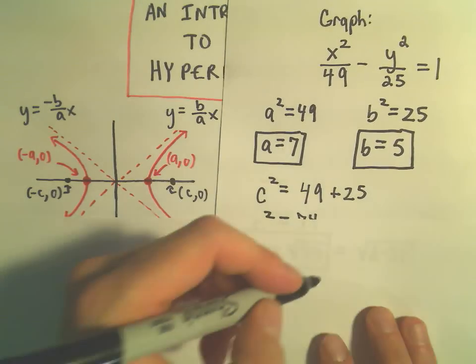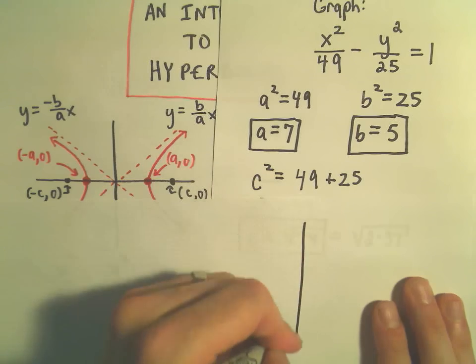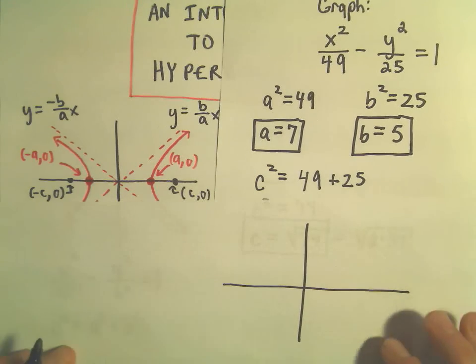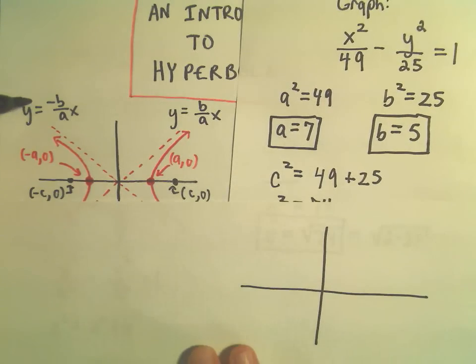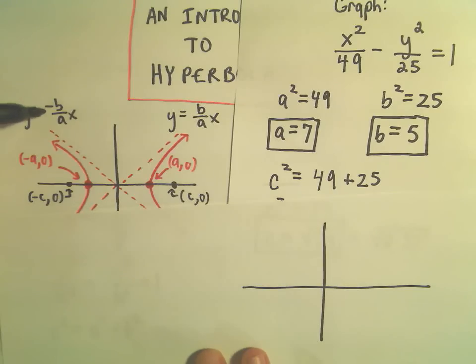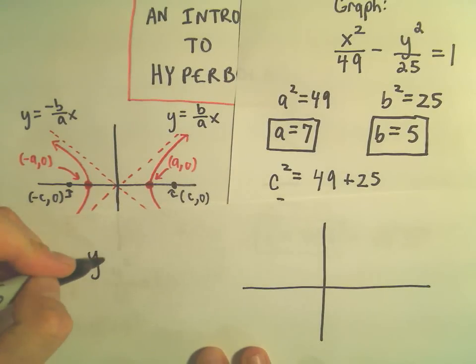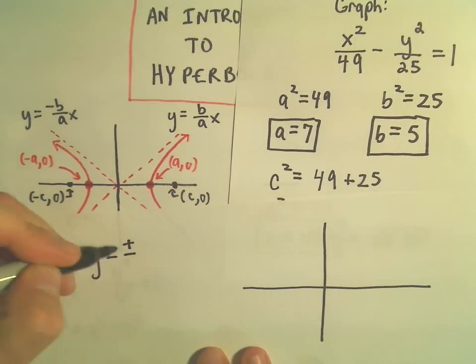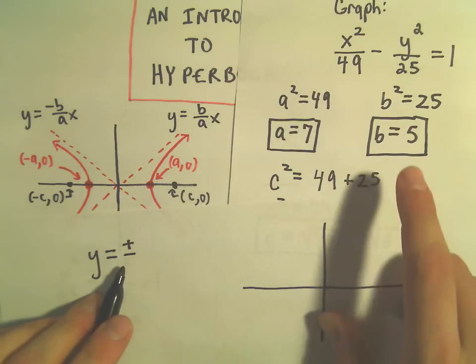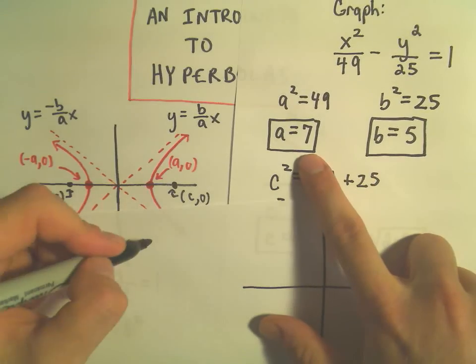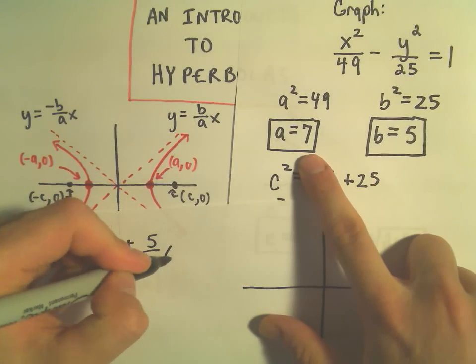Alright, so when I go to graph this. We'll come back to that in just a second. Okay, it says my asymptotes occur at y equals negative b over a and y equals positive b over a. So in this case our asymptotes are going to be at positive and negative 5 sevenths x.